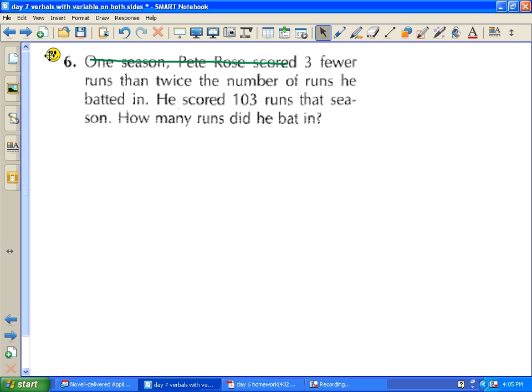Even though scored you might think is addition, if we read further, he scored three fewer. Now that means I'm going to put a blank minus three. Just like if someone were three fewer years of my age, you would do my age minus three.